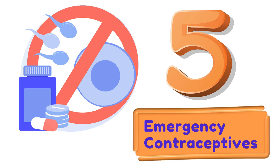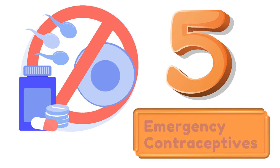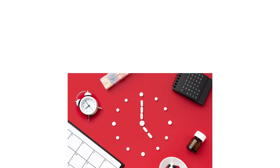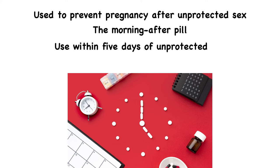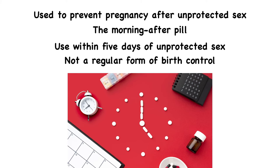The fifth method is emergency contraceptives, also called the morning after pill. This is a type of birth control used to prevent pregnancy after unprotected sex. You should use emergency contraception within 5 days of unprotected sex — the sooner, the better. You must remember that this method should not be used as a regular form of birth control.